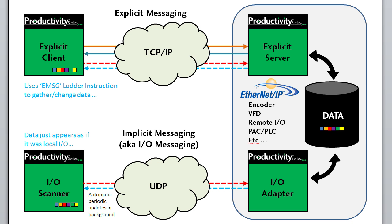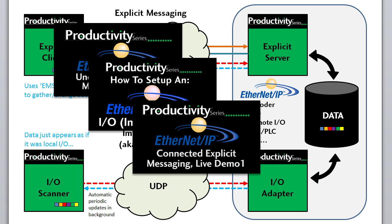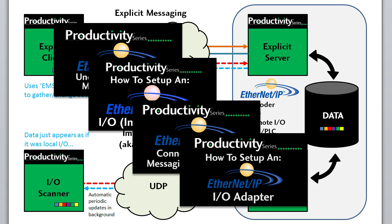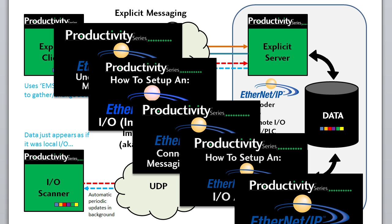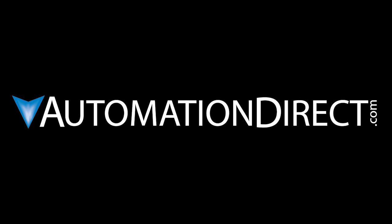Hopefully that sets the stage for you. Check out the other videos in this series to see how incredibly easy it is to configure and use the Productivity Series controllers that support EtherNet/IP to communicate with your favorite EtherNet/IP devices. Performance plus value — that's Productivity, from AutomationDirect.